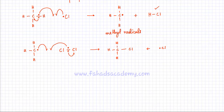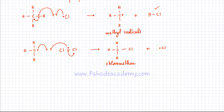As you can see, the two steps of the propagation step result in the formation of chloromethane, where one of the hydrogens has been substituted by chlorine. These are the two steps it takes to substitute one chlorine into methane. Now we're going to repeat these two steps starting with chloromethane, because one hydrogen has already been substituted.